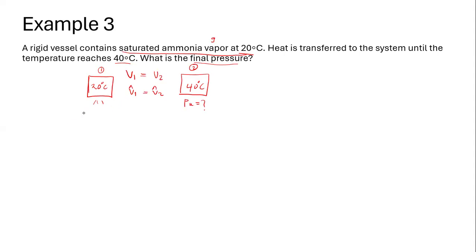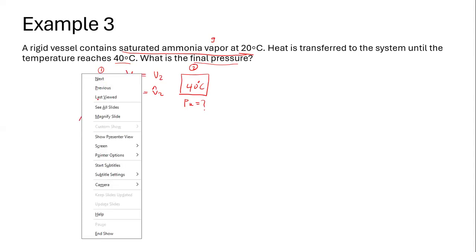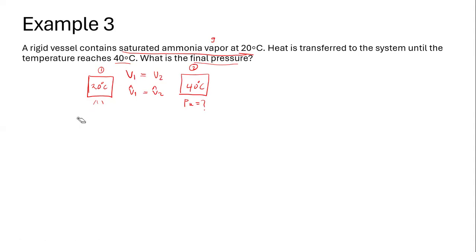The specific volume at state number one — which is v1, the specific volume of the vapor — equals 0.14922 m³/kg from the steam table. Since the vessel is rigid, v1 equals v2, so this same numerical value will be the specific volume at state number two as well.